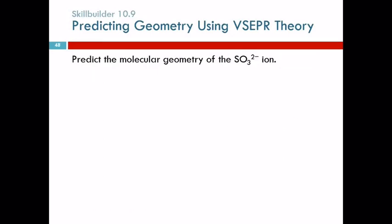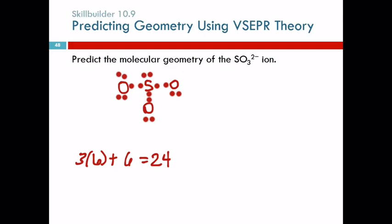Predict the molecular geometry of the SO3 to minus ion. Well, we have to start with the Lewis structure. What's probably going to be the central atom? The sulfur or one of the oxygens? We want it, the sulfur, we want it to be symmetrical. So there will be sulfur in the middle, and the oxygens are going to be around it. Then we have to count up valence electrons. Well, each oxygen has six, and the sulfur has six. So there's three times six plus one times six, so 24. So 1, 2, 3, 4, 5, 6, 7, 8, 9, 10, 11, 12, 13, 14, 15, 16, 17, 18, 19, 20, 21, 22, 23, 24.